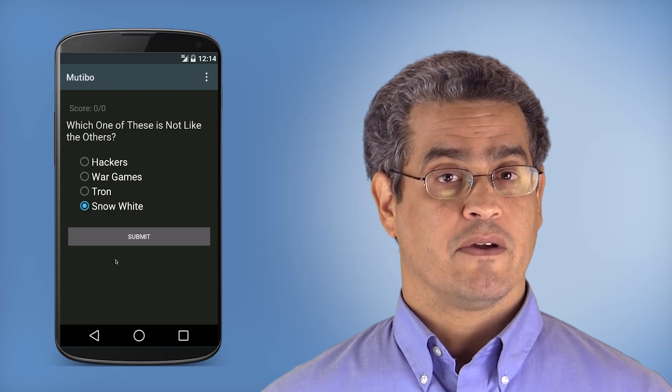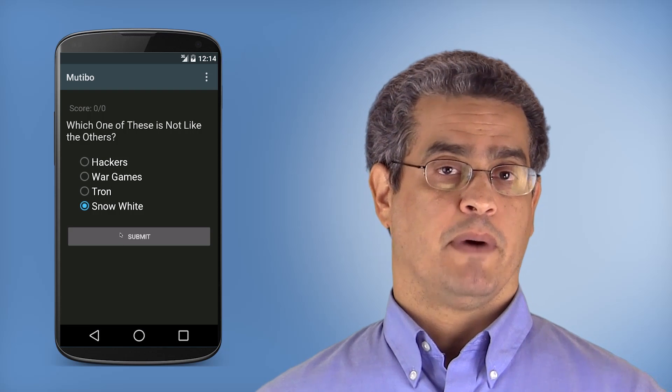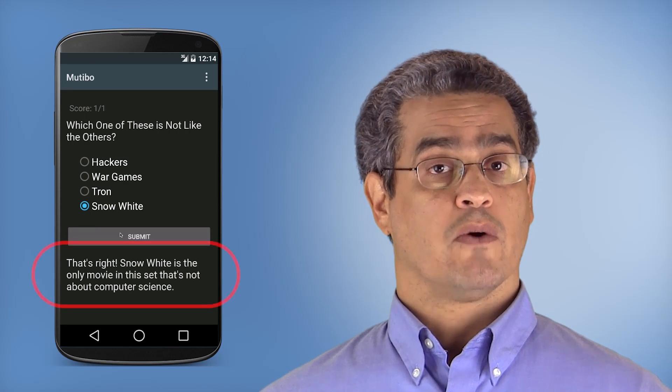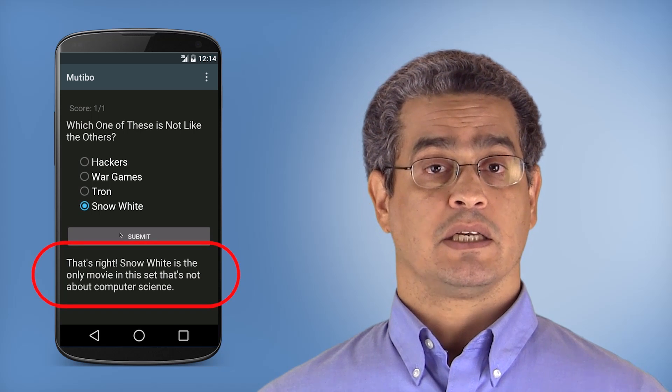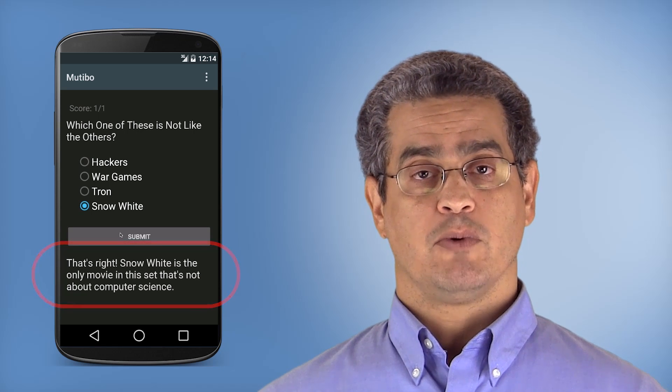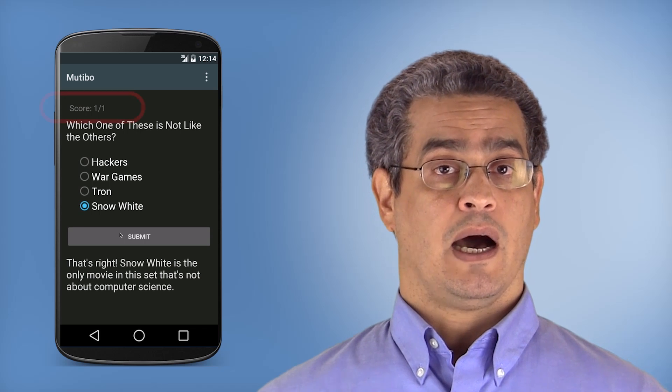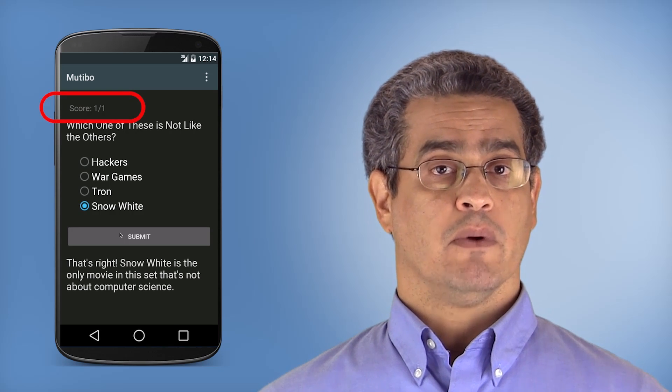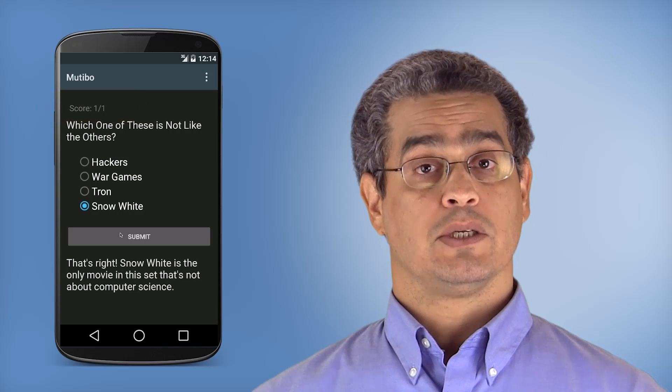Now, after making their guess, the user hits the submit button and the game tells them whether or not their guess is correct and provides some text explaining the purported link between the three related movies. And notice also that at the top, the score has now changed from 0 out of 0 to 1 out of 1 because the user made a correct guess. And the final app should also let you rate each set of movies so that obscure, illogical, or downright incorrect sets of movies can be identified and removed from the game's database.